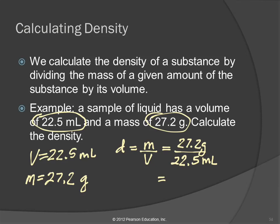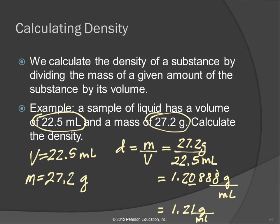I'm going to write down two or three beyond what I need instead of everything. So: 1.2088... The units are grams per milliliter — those don't cancel out. Three significant figures: the one, the two, the zero. So I'm going to round that to 1.21 grams per milliliter. Writing vertical fractions by hand is better, but 1.21 grams per milliliter is the answer.